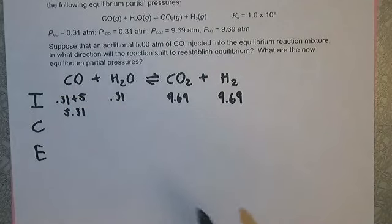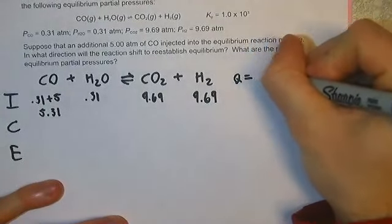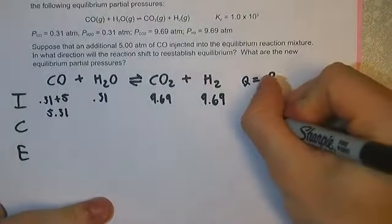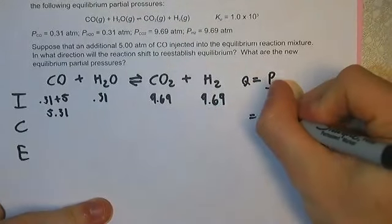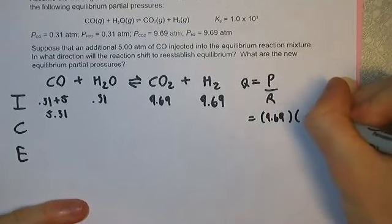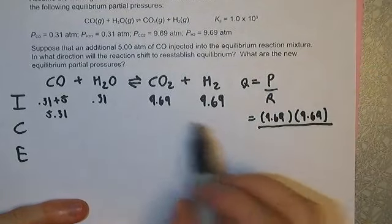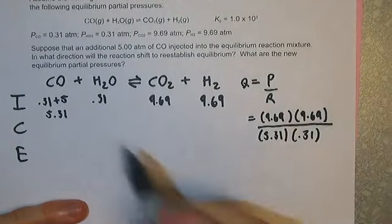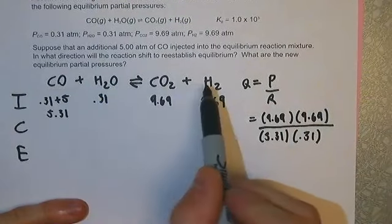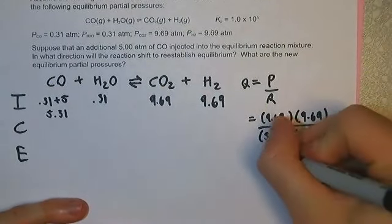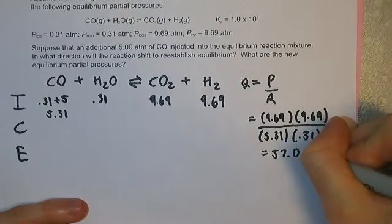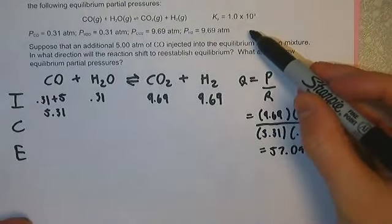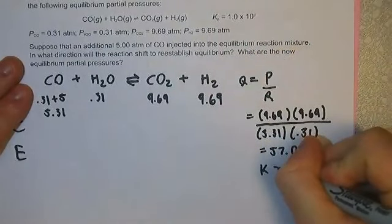Q is equal to products over reactants. It's the exact same thing as K, it's just not at equilibrium. So let's fill in what we know. We have 9.69 and 9.69 divided by 5.31 and 0.31. Everything in my reaction has a coefficient of 1, so we don't have any exponents here. Run the numbers here and Q would be equal to 57.04. We're given Q, 57.04, and we're given K, which is 1,000. K is greater than Q. So which way is our reaction going? It's going right.